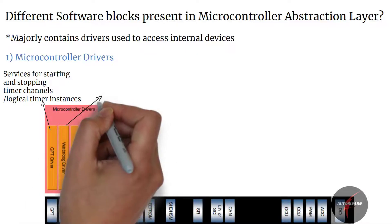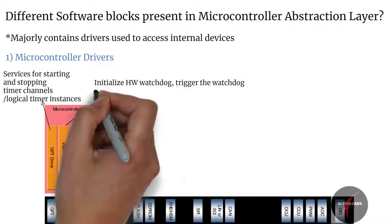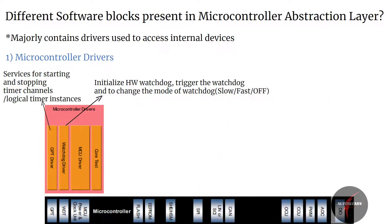The watchdog driver is used to initialize the hardware watchdog, trigger the watchdog, and to change the mode of the watchdog into slow, fast, or off. Slow mode implies that the watchdog timeout is high, for example 1000ms, which is generally configured during system startup. Fast mode implies the watchdog timeout is low, for example 100ms, which is generally configured during runtime.